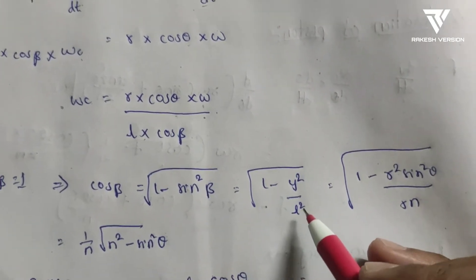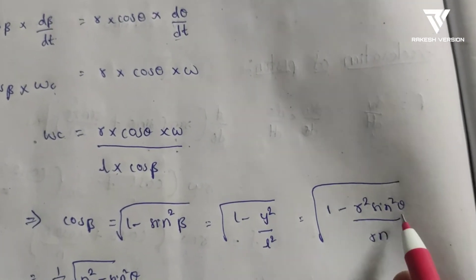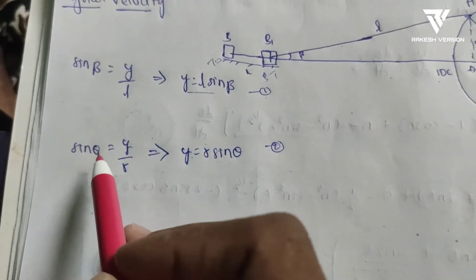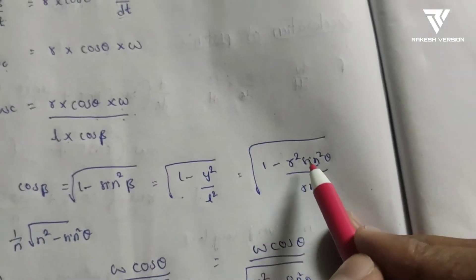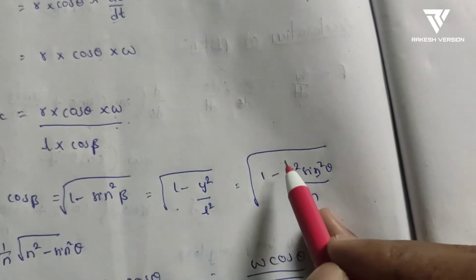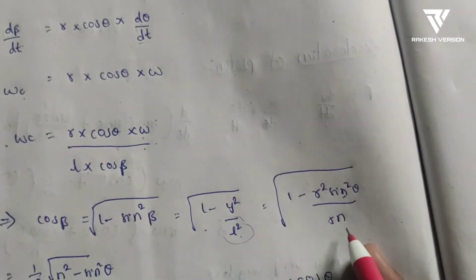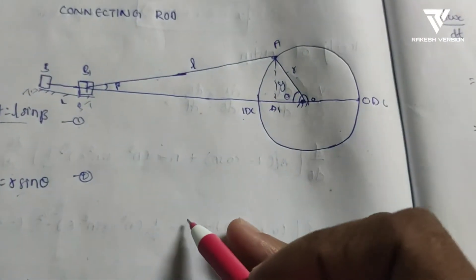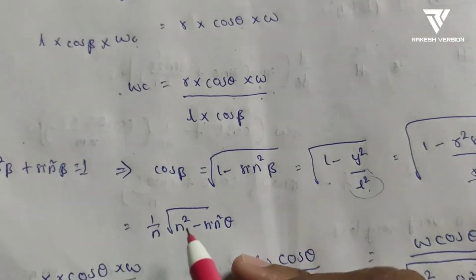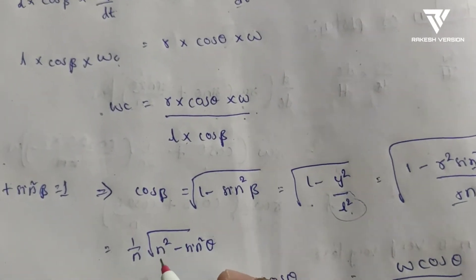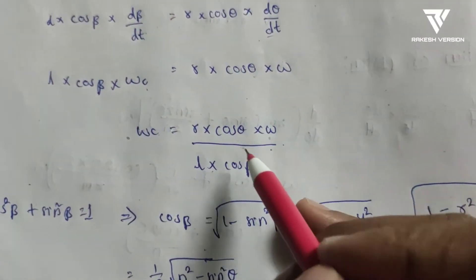Substituting y = R·sin θ in place of y, we get cos β = √(1 − (R·sin θ/L)²). Introducing the obliquity ratio n = L/R (so L = R·n), this simplifies to cos β = (1/n)·√(n² − sin²θ).